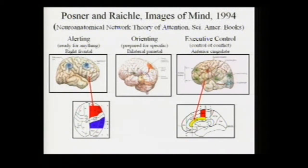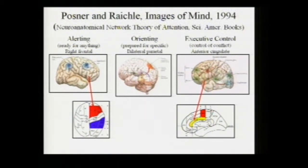Here is a summary of the neuroanatomy of attention deficit disorder, defined by Mike Posner and Marcus Raichle's neuroanatomical network theory of attention. They separate attention processes into three: alerting — how ready a child is for something that might occur; orienting — how an individual prepares for something specific; and executive control — how inhibiting impulses to wait and respond at the appropriate time is executed. The right frontal lobe is the center of the alerting network, and the anterior cingulate gyrus is the center of the executive control network.